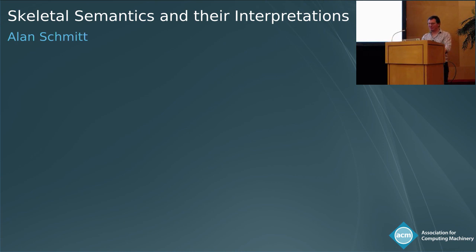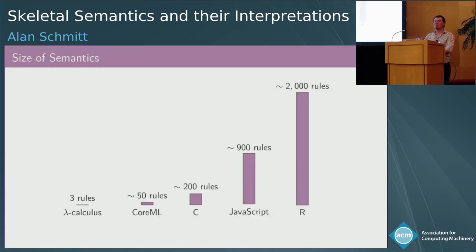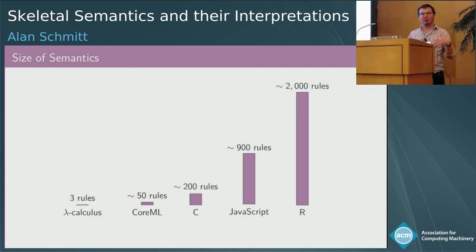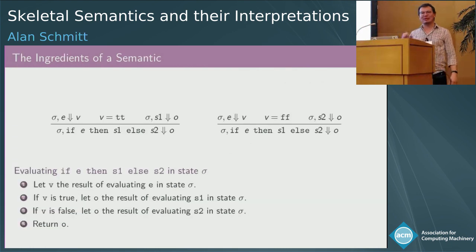Semantics can be very big things. If you look at this ballpark estimate of the number of small step rules used in the formalization of some languages, you can see that they can grow quite huge. There are some common structures, some common elements.